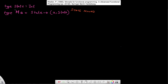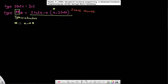What I've done here is I've created two kinds of labels: one for integer, labeled State, and one for this function, labeled M of A. M over here is acting as a type constructor. The kind for M is that it takes in a concrete type — a star — and gives you back another concrete type. So the kind of M is star to star.